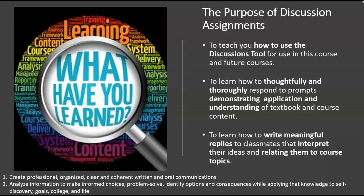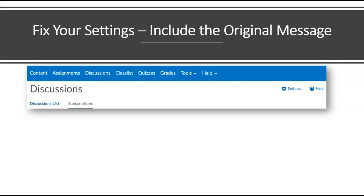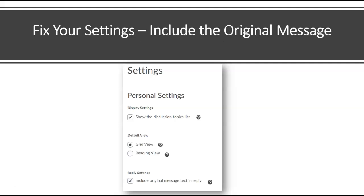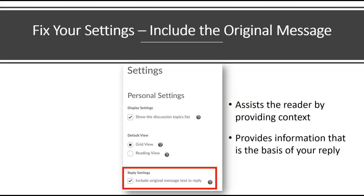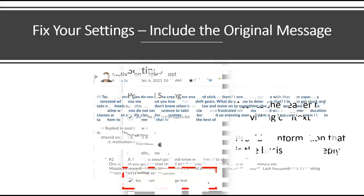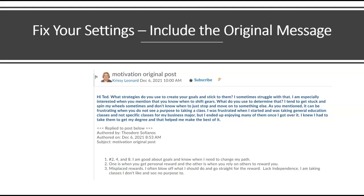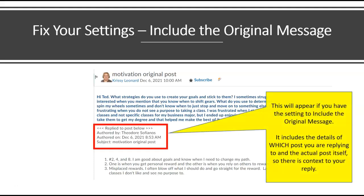Add the default setting to include the original message in your replies. Once set, this will apply to all discussions in this course. Go to discussions in the navigation bar, choose settings, and add a checkmark to the reply settings where it says include original message text in reply, and save. You lose points if the original message is not included in your replies. Here is an example of that setting. It stamps your reply with a heading related to the classmate post and includes the text from that post, providing the reader context for your reply.